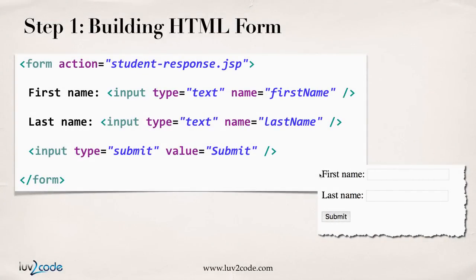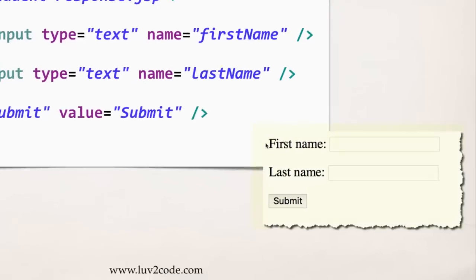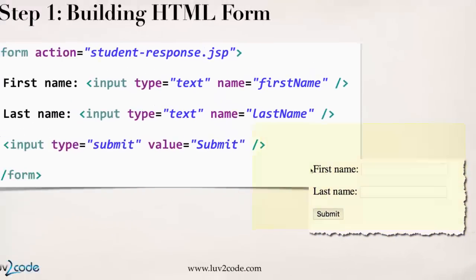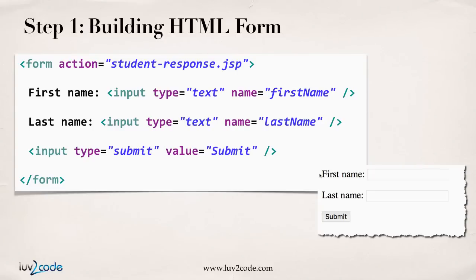Here's the coding for the HTML form. We want to have an HTML form for the first name and last name, along with the submit button. When you build an HTML form, you start off with the form tag and then you specify the action — you're basically telling the system where to send the form data. Here, we're telling the system to send the form data to studentresponse.jsp.